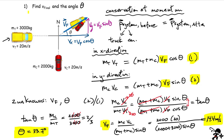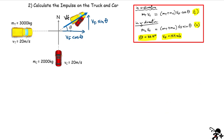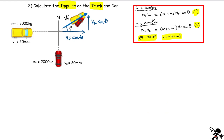Now let's move to the second part: calculating the impulse on the truck and the impulse on the car. Regardless of the object, impulse can be calculated as force multiplied by the time that force acts, or as the change of momentum of the object. For this problem, it's best to use the change-of-momentum definition.